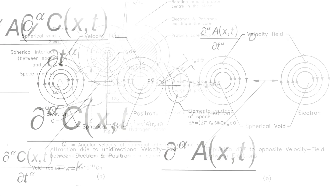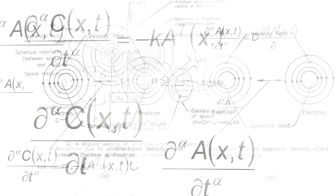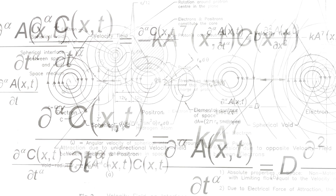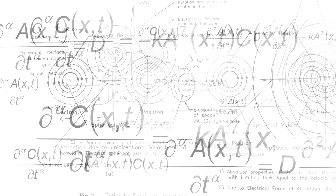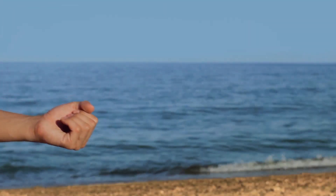The double-slit experiment is one of the most famous experiments in quantum physics. The late physicist Richard Feynman once described it as containing the essential mystery at the heart of quantum mechanics. The double-slit experiment proves that quantum particles can behave as either waves or particles, and is a great illustration of